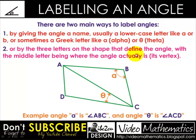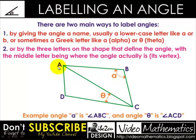If we take B as the vertex and AB and BC as two rays, the name given to this angle will be angle ABC. Look here — the same thing can be done with theta. Take C as the vertex and AC and DC as two lines. By this endpoint you will find that the angle formed is theta; you can also name the angle ACD.